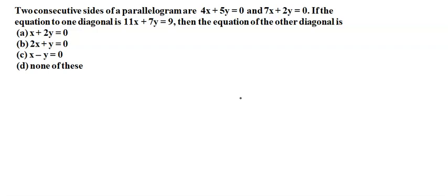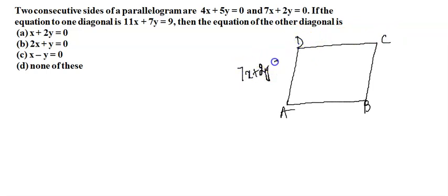Let's start with our very first question. In this, it is given that two consecutive sides of a parallelogram are 4x plus 5y equals 0 and 7x plus 2y equals 0. So suppose this is a parallelogram ABCD, and its two sides are 7x plus 2y equals 0 and 4x plus 5y equals 0.